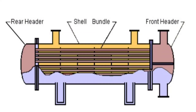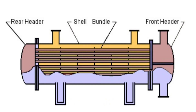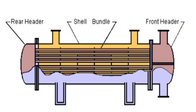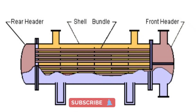A shell and tube heat exchanger consists of a number of tubes mounted inside a cylindrical shell. Two fluids can exchange heat: one fluid flows over the outside of the tubes while the second fluid flows through the tubes. The fluids can be single or two phase and can flow in a parallel, cross-counterflow, or counterflow arrangement. The shell and tube exchanger consists of four major parts: the front end, where the fluid enters the tube side of the exchanger, and the rear end, where the tube-side fluid leaves the exchanger.